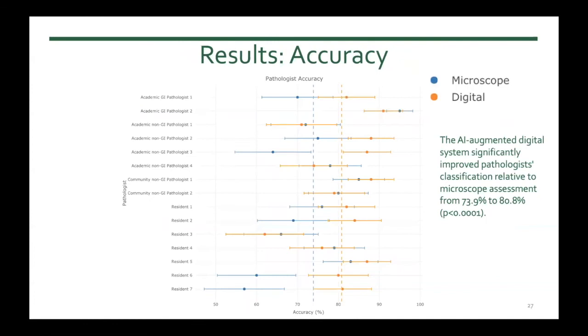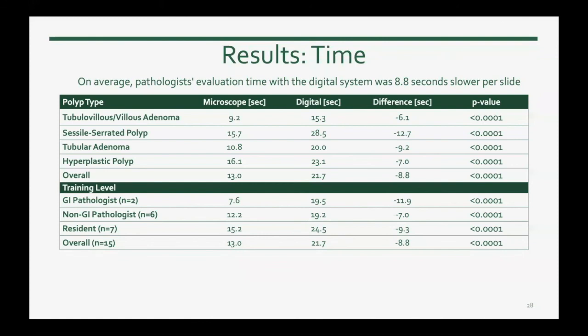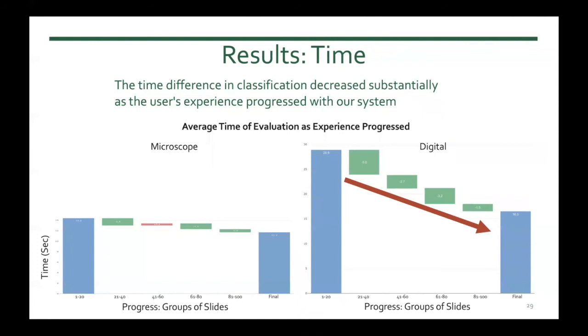This figure shows the effect of our digital system on accuracy of pathologists for each participant. The classification accuracy of pathologists overall, on average, increased from 73.9% to 80.8%, which was statistically significant. However, as we anticipated, the time of assessment for pathologists increased a little bit — on average by 8.8 seconds. This was true for all types of polyps and at all training levels. The encouraging point is that the time difference in classification decreased substantially as users gained experience with our system.